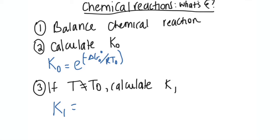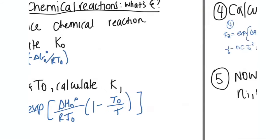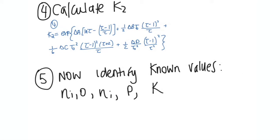Step number three is if your T does not equal your T naught, then you can happily solve for K1. So K1 here, I'll just rewrite what it is - e to the exponent ΔH° over RT0 times (1 - T0/T). Not too hard. And then after that, you'd calculate your K2 from this equation that I've shown you below.